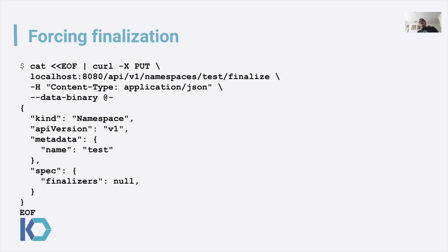There's one situation you might run into where you need to force finalization for a namespace. This is basically where you've deleted a namespace and cleaned out all of the objects under it, but yet the namespace still exists. Here's the command to force the finalization — this is one of the reasons why I showed you the raw API calls before. There's an API call off of the namespace called finalize. It informs the namespace controller that it needs to remove the finalizer from the namespace and perform any cleanup. It's basically a nice way of telling the namespace to remove the finalizer on it.